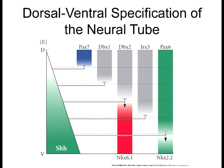This just shows thresholds of Sonic Hedgehog and how different thresholds can turn on different genes. At low levels, it blocks PAX7, so PAX7 can only be expressed down to a certain point. You can see how the morphogen gradient causes different proteins to be turned on at different levels — it's all about the morphogen gradient.